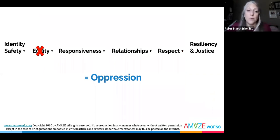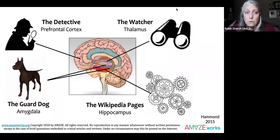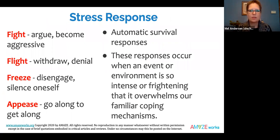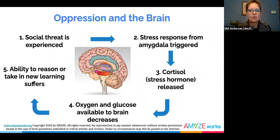When equity is missing in a classroom, students and teachers will respond with attitudes and behaviors that indicate oppression is present and not equity. It is true that oppression has significant effects on the brain. Research in neuroscience has revealed that the brain responds to perceived social threats in the same manner as threats to survival. When threatened, a stress response from the amygdala — fight, flight, freeze, or appease — is triggered. Cortisol, the stress hormone, is released and the oxygen and glucose available to the brain to support cognitive reasoning are decreased. This means we are less likely to reason clearly or take in new learning. It is here that our unconscious biases can appear.